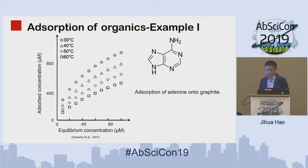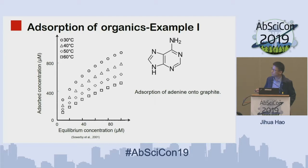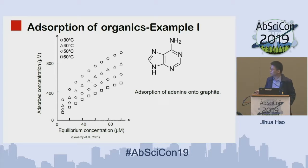Compared with inorganics, there are not so many studies on the absorption of organics. I showed just several available cases. This one studied the absorption of adenine onto graphite. Increasing the temperature from 30°C to 60°C will decrease the absorption of adenine, which may be because of the change in pi-pi interaction and hydrogen bonding between the adenine and the graphite surface.